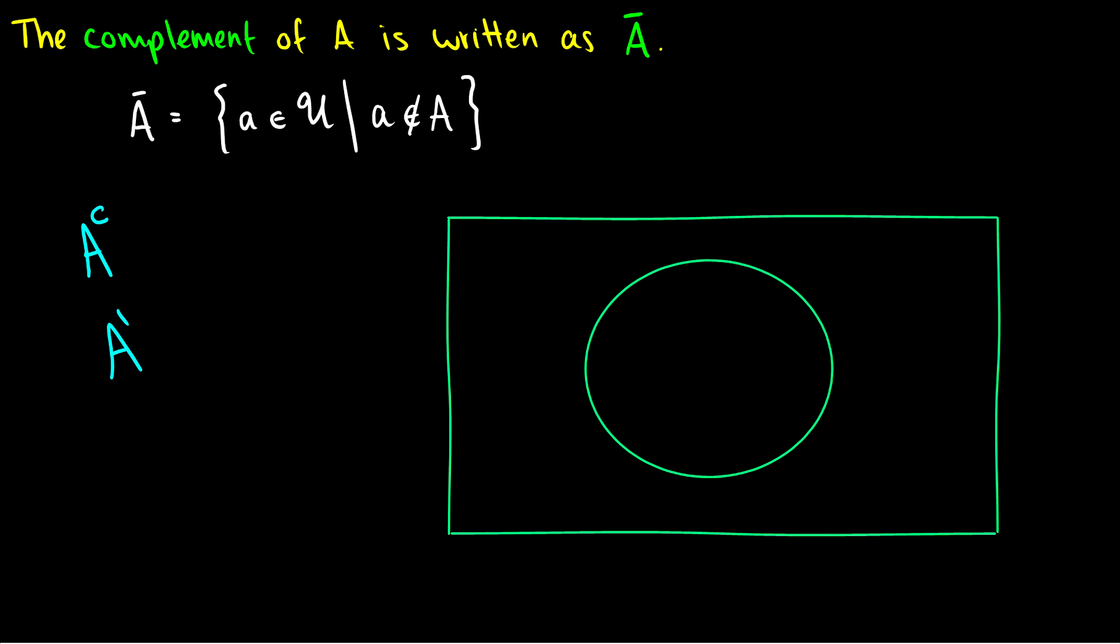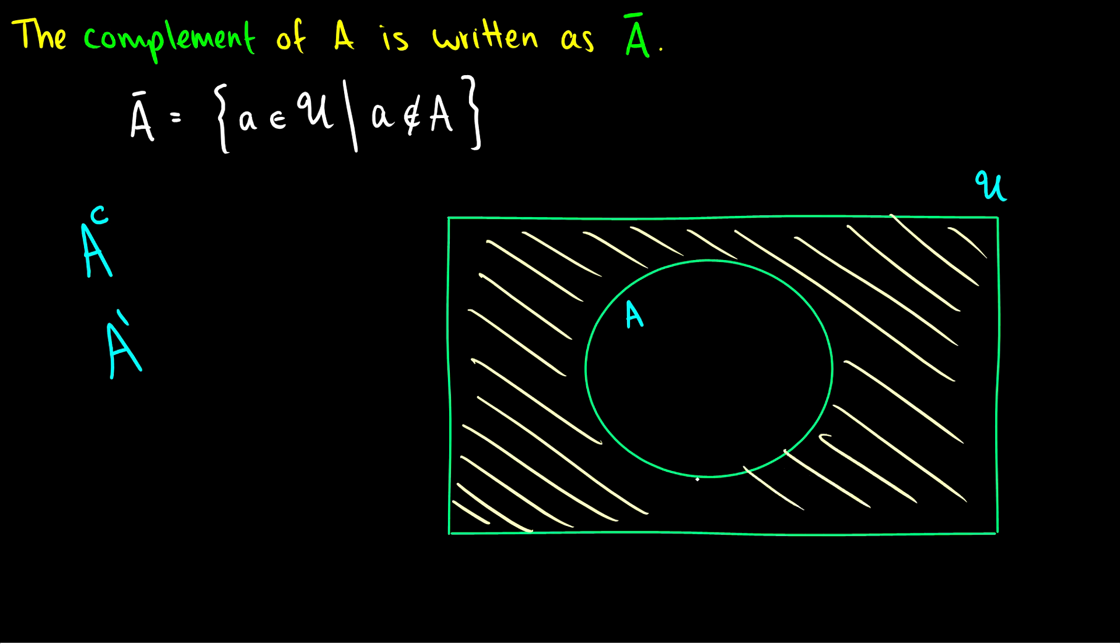Essentially if we have a set A and this is our circle and a universe U, the complement of A is everything outside of the set A that is in the universe. So in order to define a complement you need a universe to talk about.